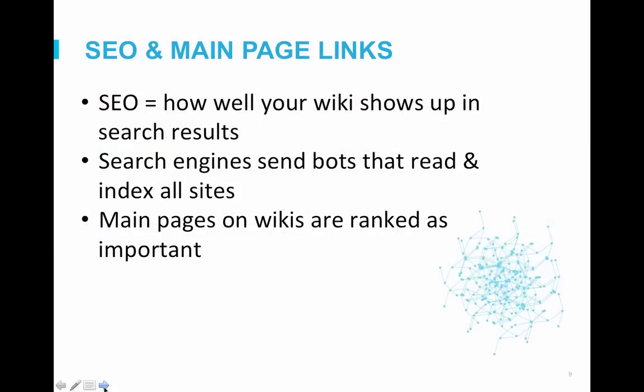One important area to keep in mind when adding content to your main page is how well your main page does in internet searches. This is called SEO, or search engine optimization — what companies like Google do to rank your wiki when people search for similar topics. The better your SEO is, the higher your wiki will appear in search results. Main pages are highly considered when search bots index your wiki.